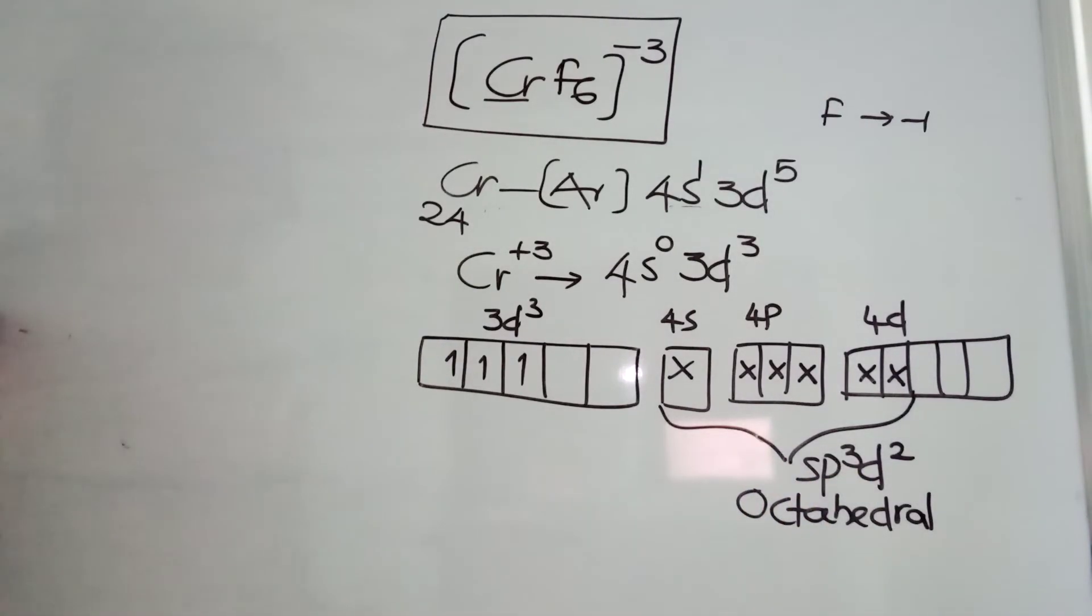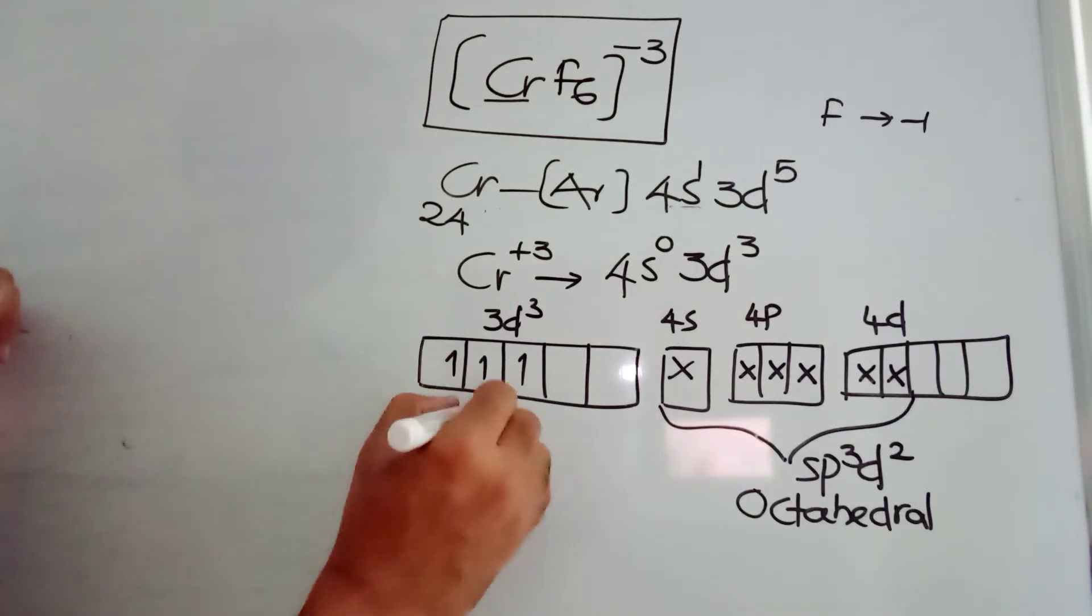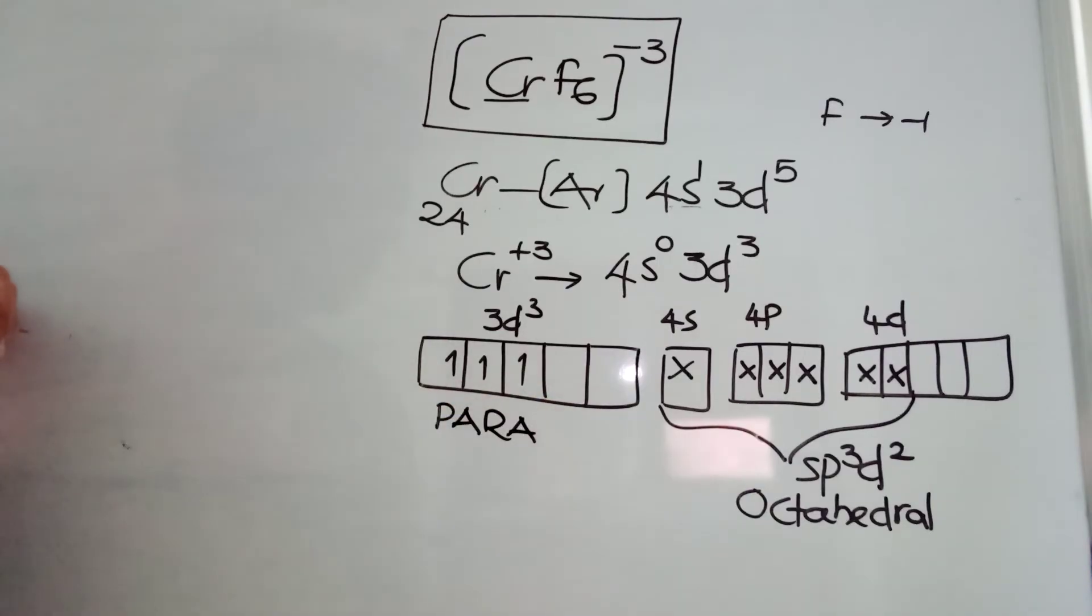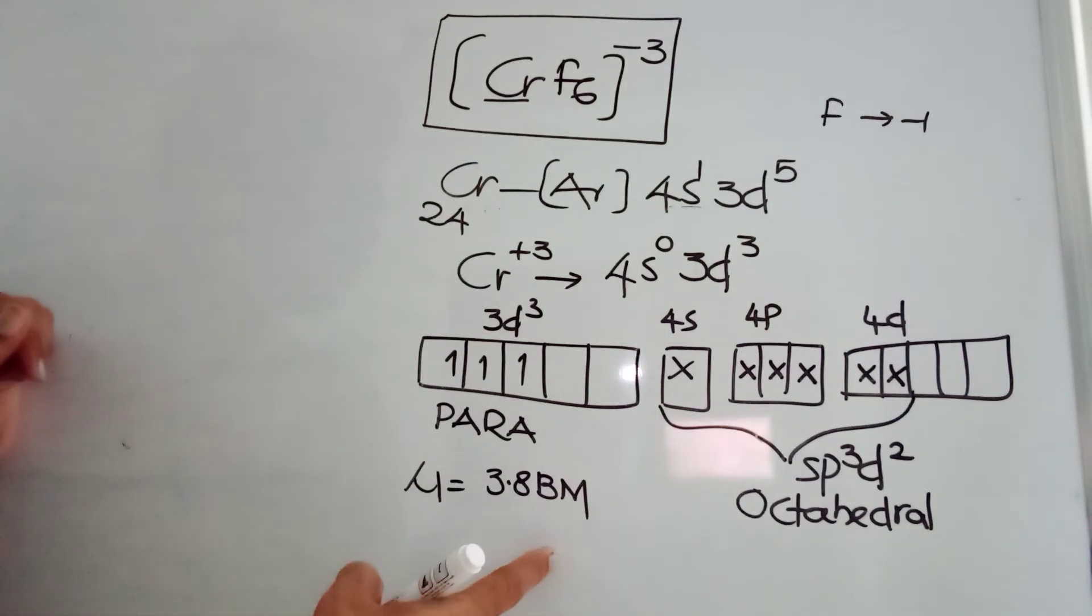Due to the presence of 3 unpaired electrons, you can say it is paramagnetic. If you want to find out the mu magnetic momentum, 3 unpaired electrons are there, so it will be approximately 3.8 to 3.9 Bohr magnetons.